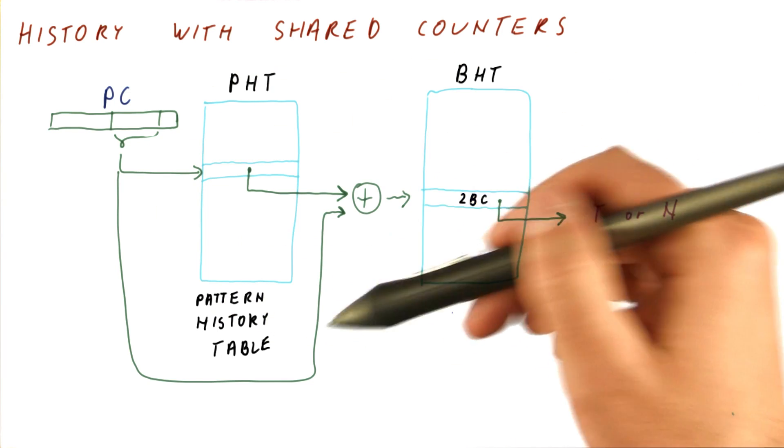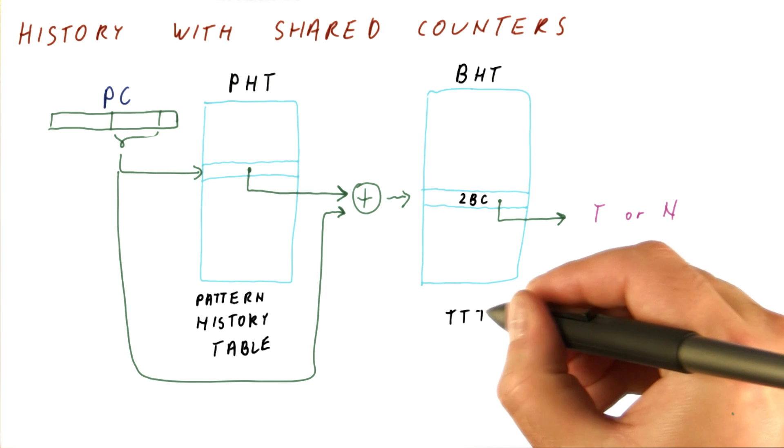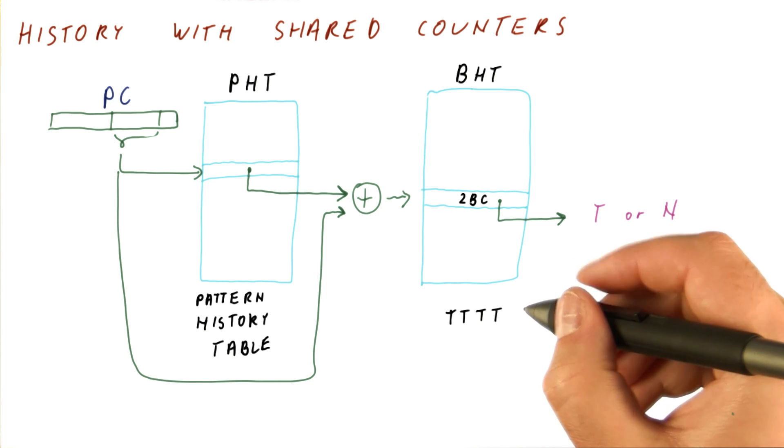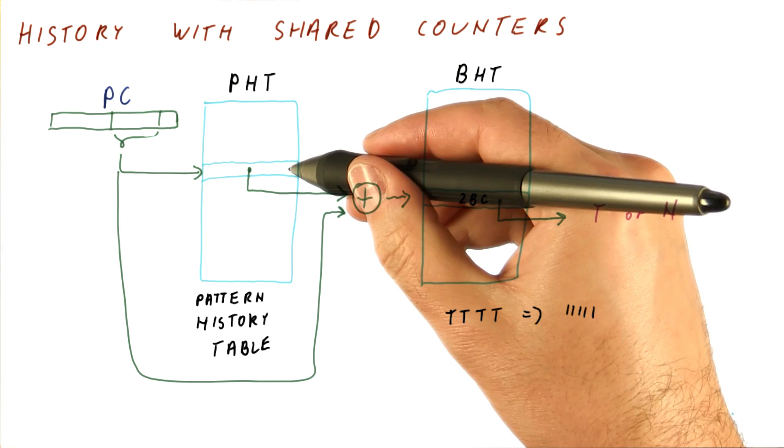Now let's see how well this works when we have a branch that is just always taken. In that case, the entry for that branch will just be all ones in the history.